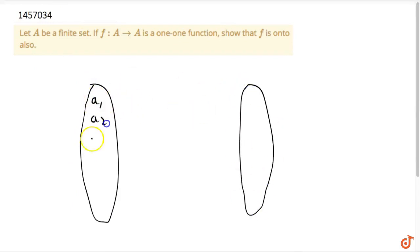This is a1, a2, a3 till an. And this is a1, a2 till an. The finite elements.